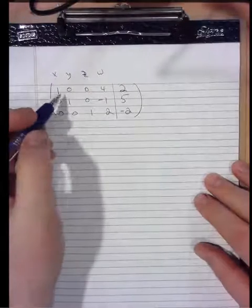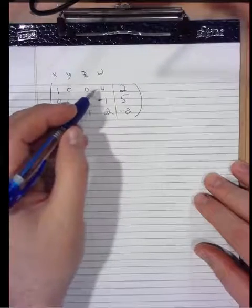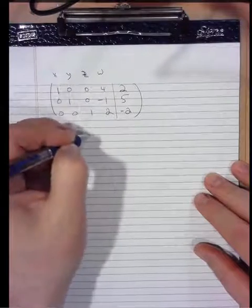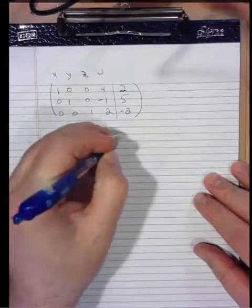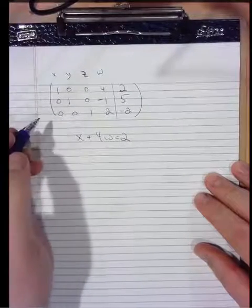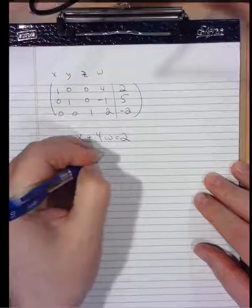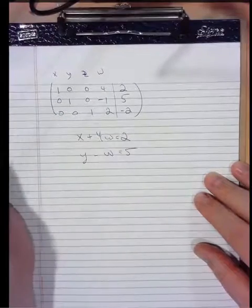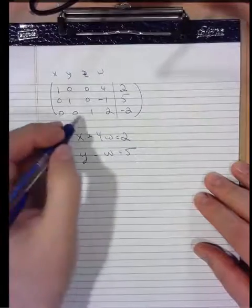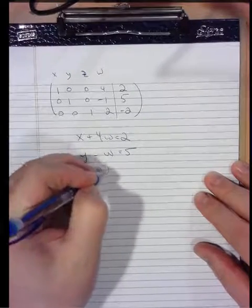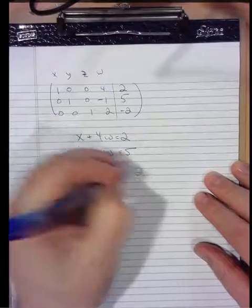once more reading out the equations in the background, the top row tells us that x plus 4w equals 2. The second row tells us that y minus w equals 5. And the third row tells us that z plus 2w equals negative 2.